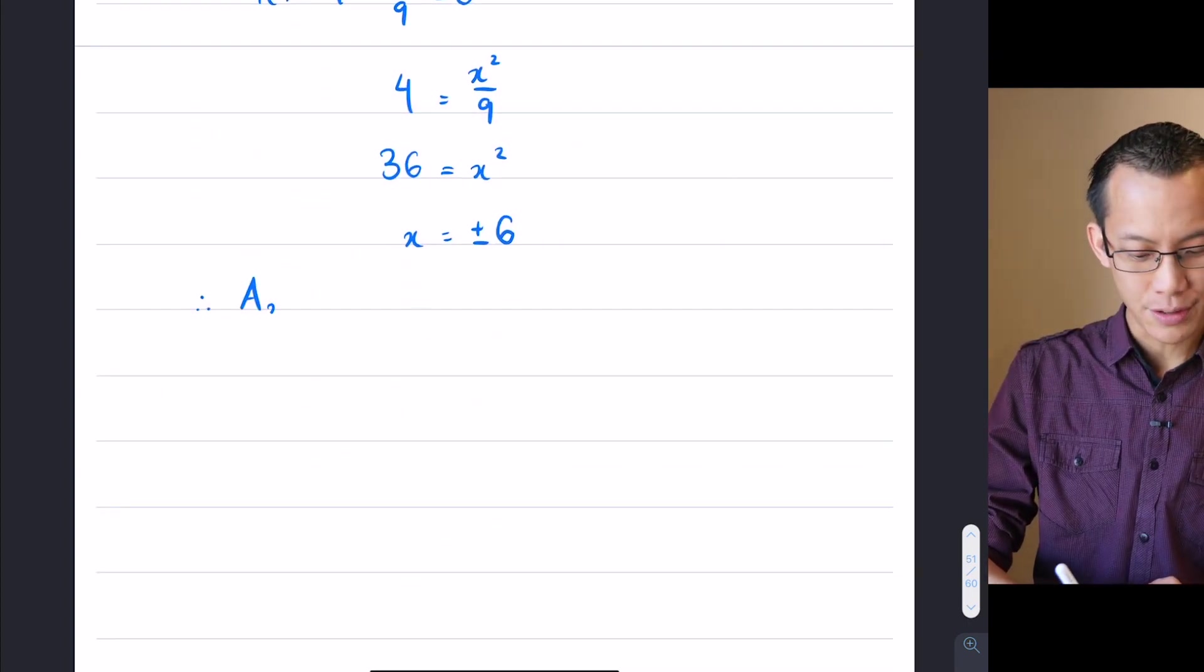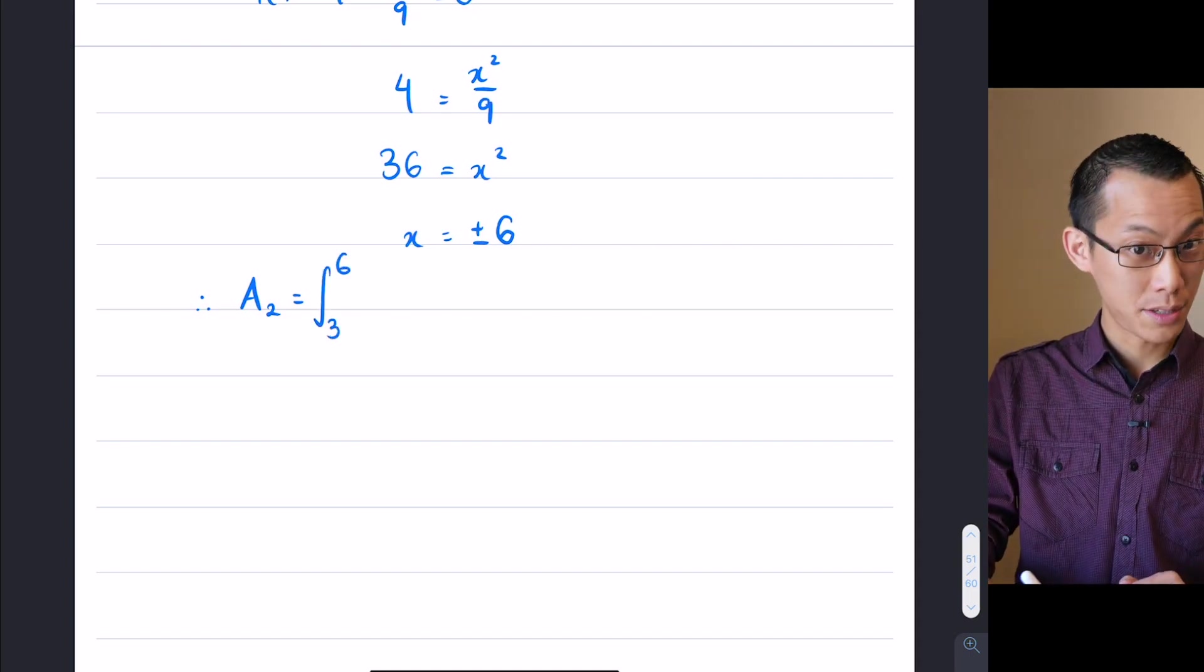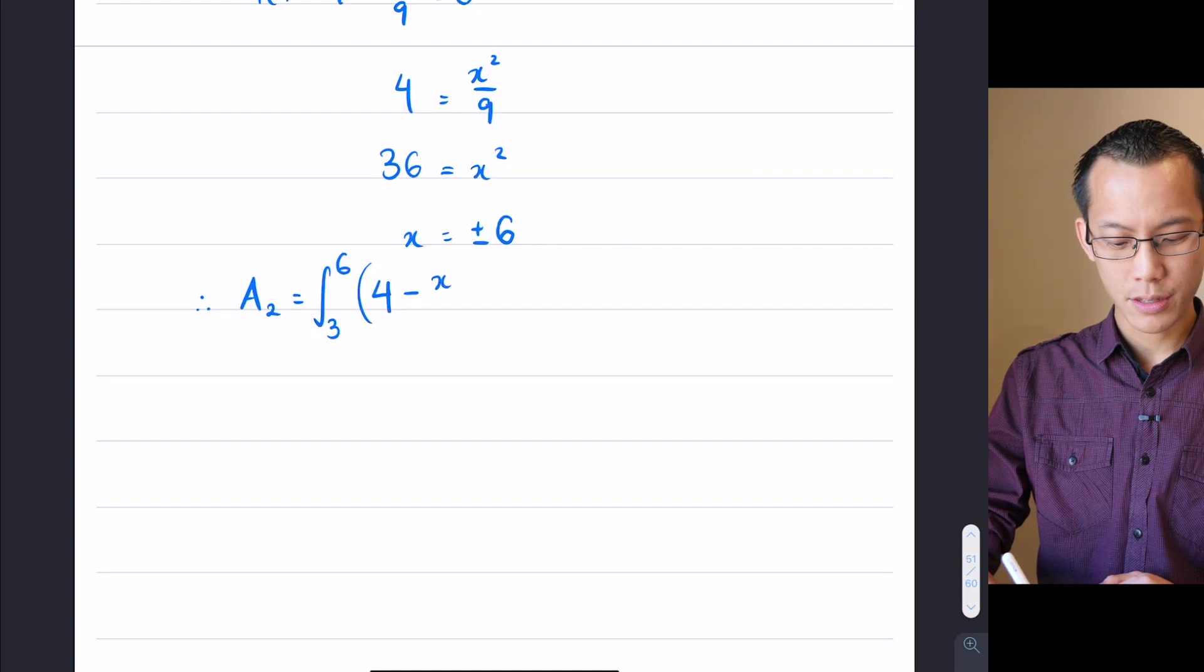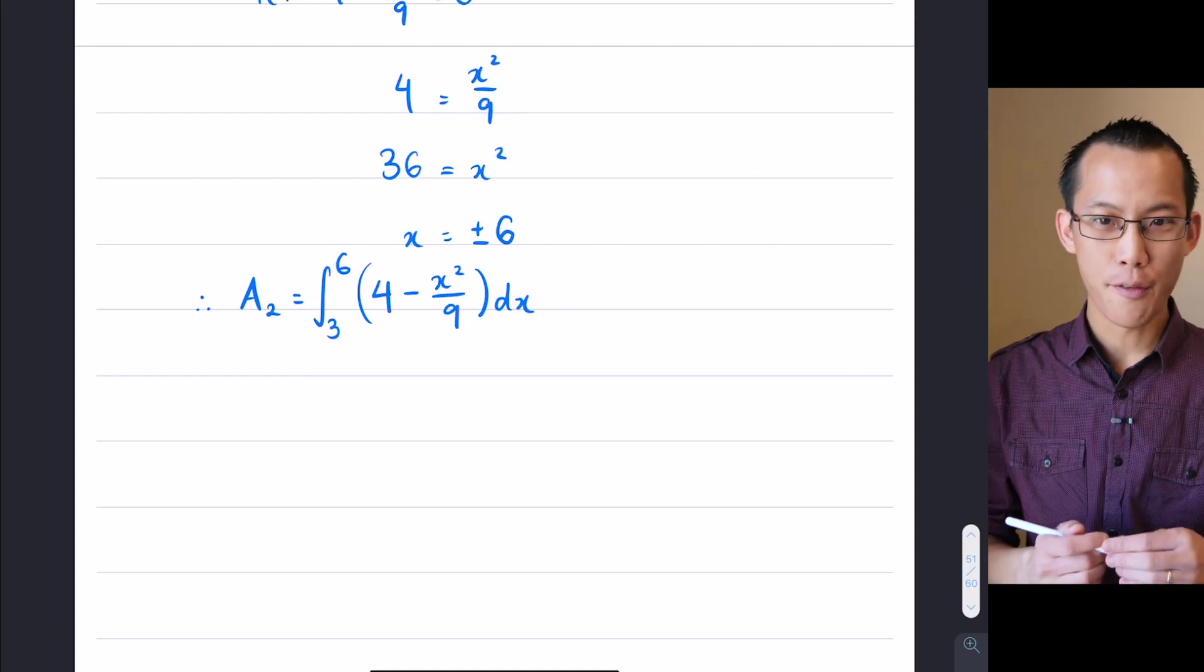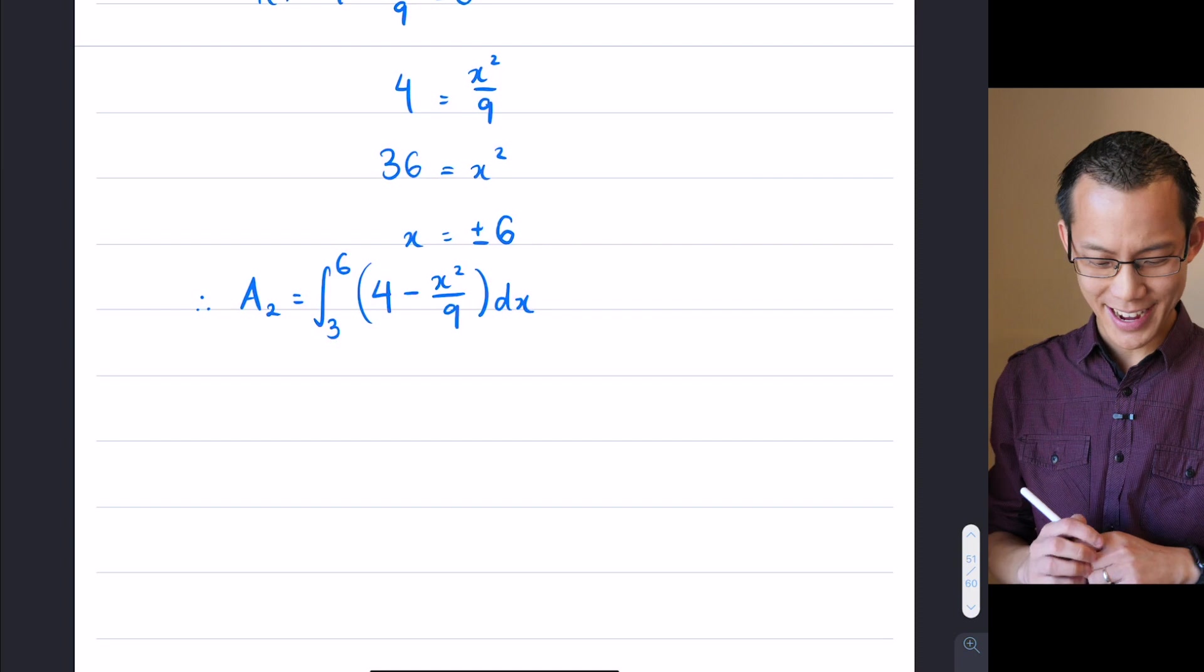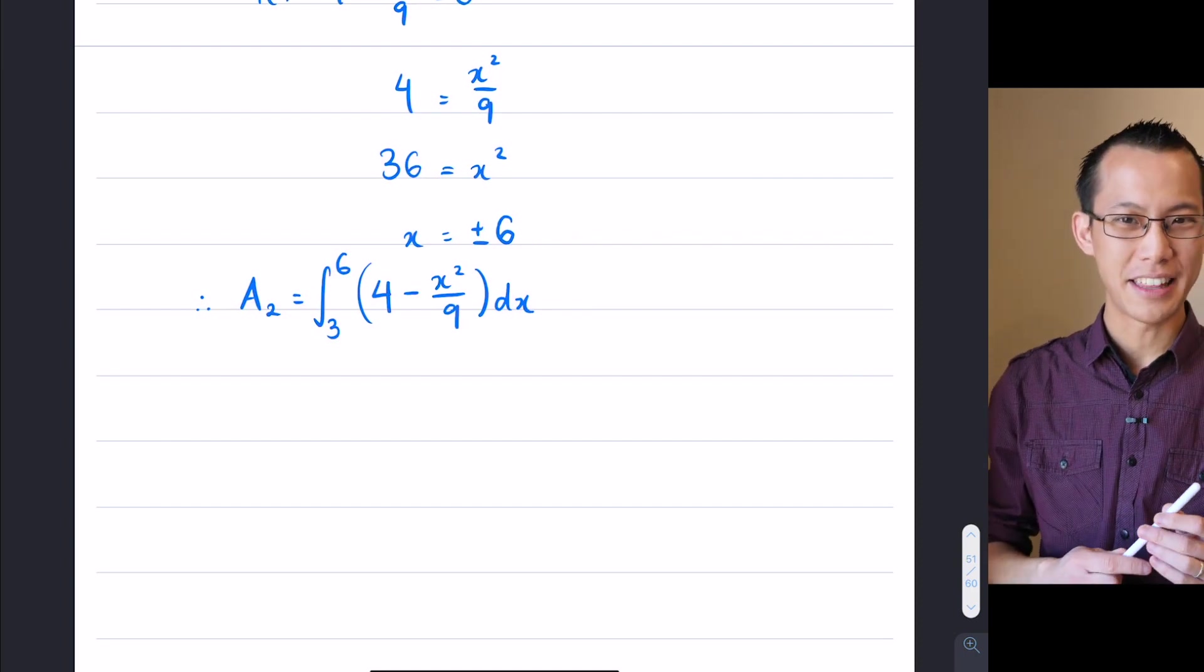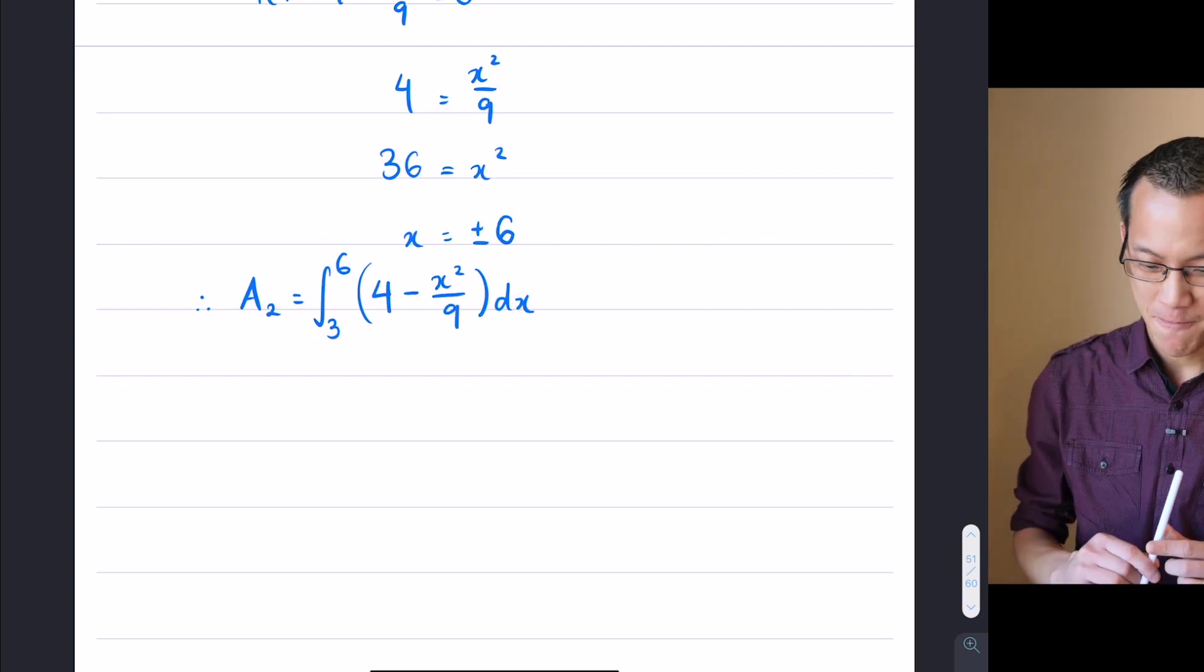Therefore, A2 is going to be an integral from where to where? Lower bound 3, upper bound 6. What is the integrand, the thing that we're integrating? It's the parabola, right? 4 minus x squared over 9, with respect to x, and then off you go. So here's what we'll do. I'm going to give you a 20 second head start to go ahead and integrate this, and evaluate at 6 and then at 3, and then I'm going to start putting my working there. So you're on the clock, have a shot, and then I'll show you what the answer should turn out to be. Off you go.